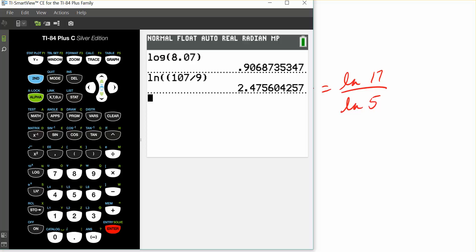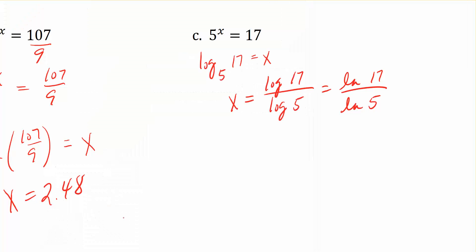I'm going to take the ln of 17, make sure I close my parentheses before I hit the division button, divided by the ln of 5, enter, and I find out that the answer is 1.76. x equals 1.76.